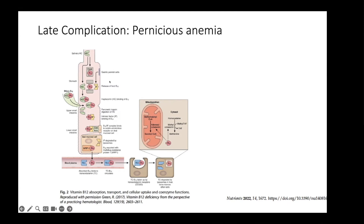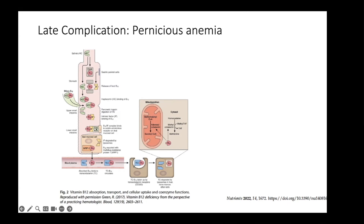Pernicious anemia causes many systemic effects, including neurological symptoms such as ataxia, impaired vibration sense, psychosis, mood disorders, and dementia. There are also hematological consequences and effects on bone health. With regards to symptoms more broadly, they can be very nonspecific — dyspepsia, epigastric pain, early satiety, postprandial fullness — and most people presenting with these symptoms do not have autoimmune gastritis.